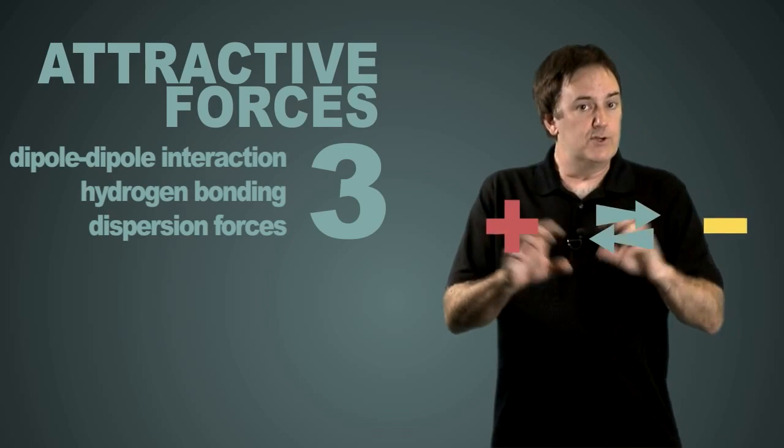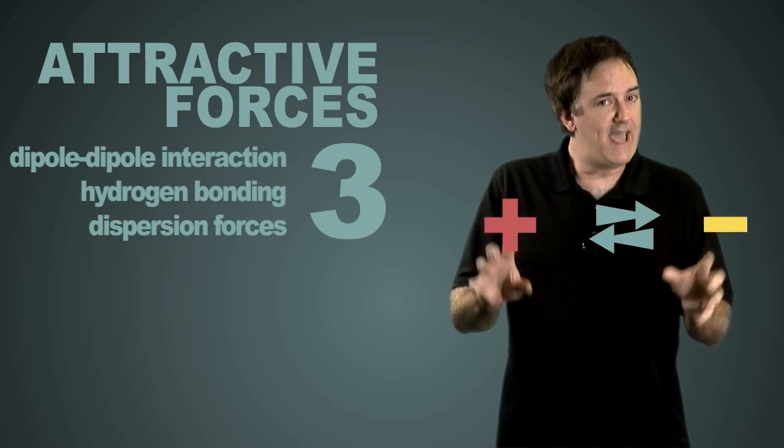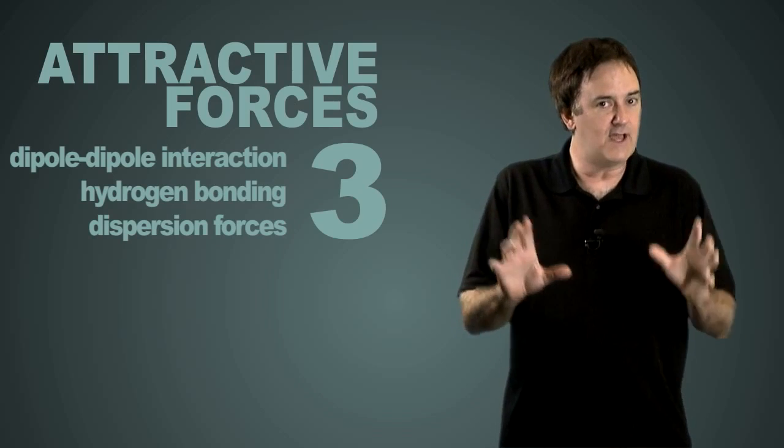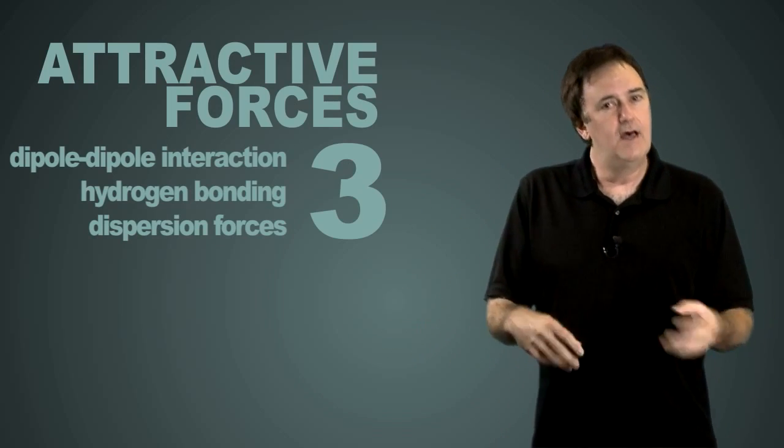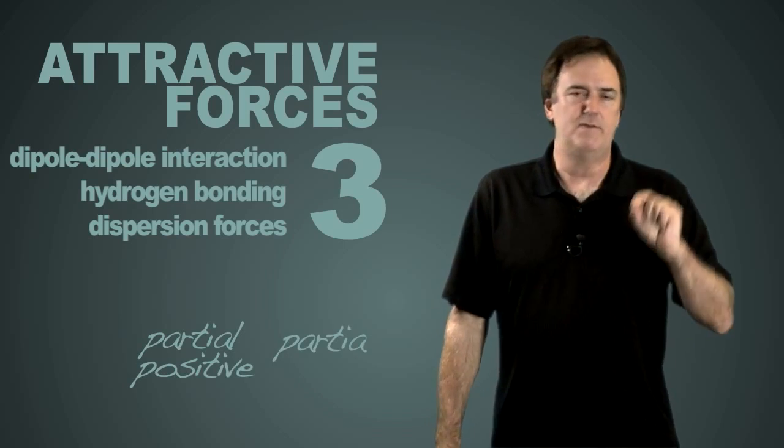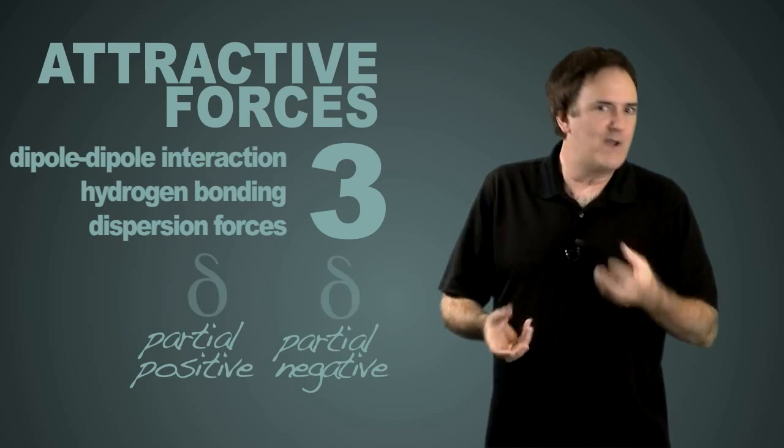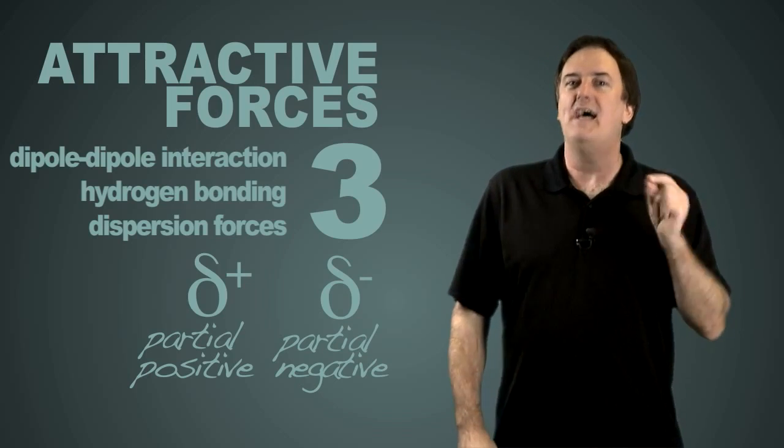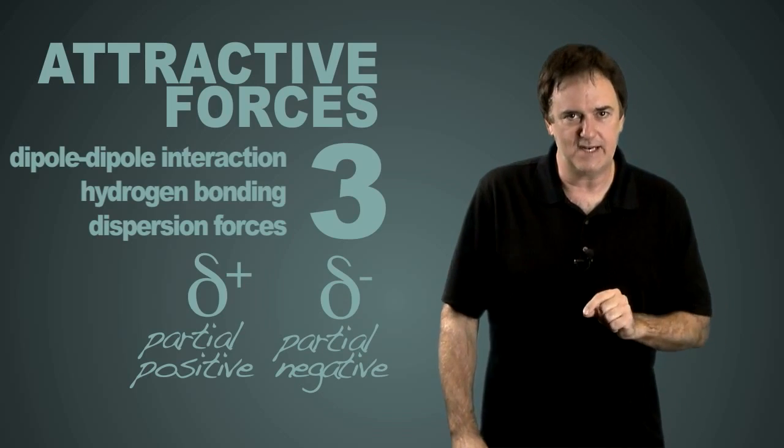Most molecules, being neutral species, do not have full positives and full negatives on them. That tends to be the world of ionic molecules. So we're constantly writing partial positive and partial negative. We even have the way we symbolize it on paper, which you should be used to as these partial positive and partial negative charges.